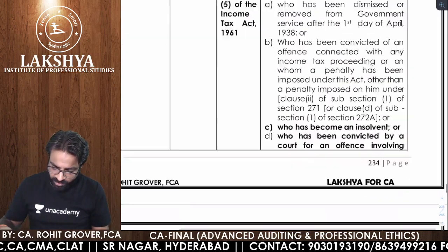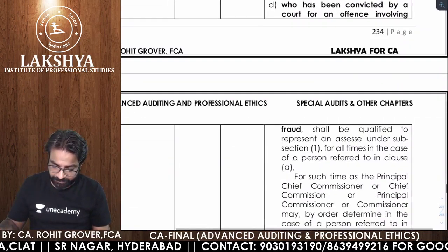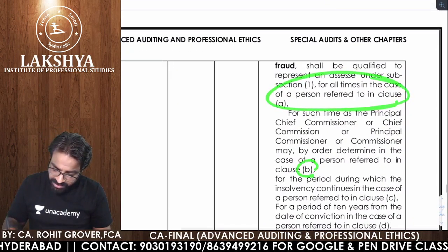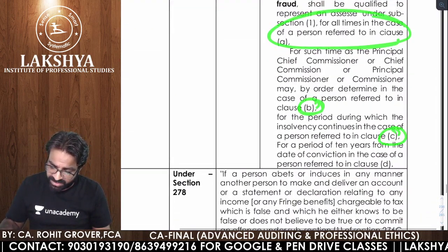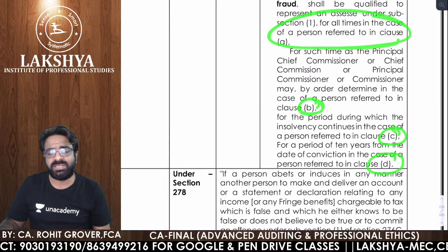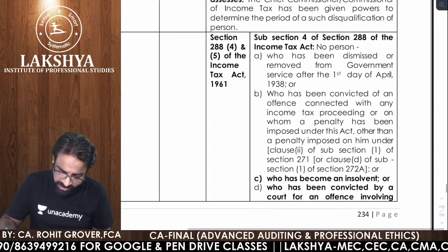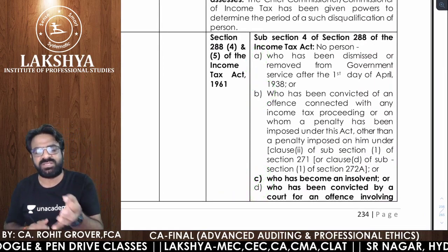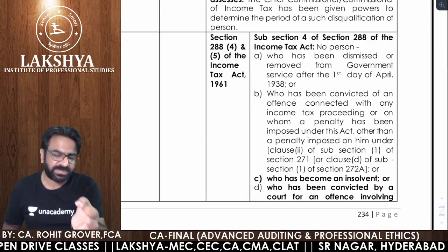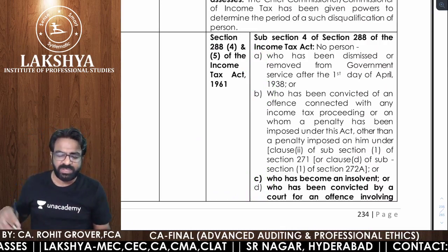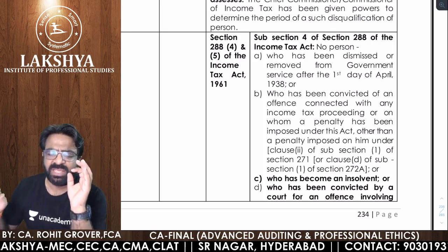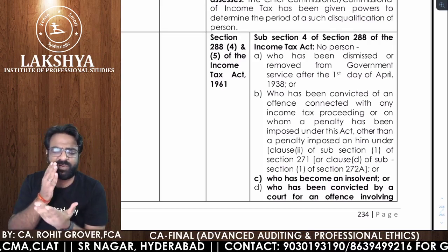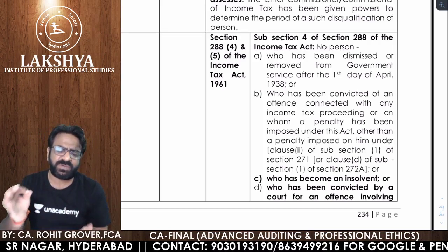Under Section 288 subsection 4, there are disqualifications in clauses A, B, C, and D. Clause A: if you were removed or dismissed from government service after 1st April 1938, you are permanently disqualified from representing any assessee in income tax authority.